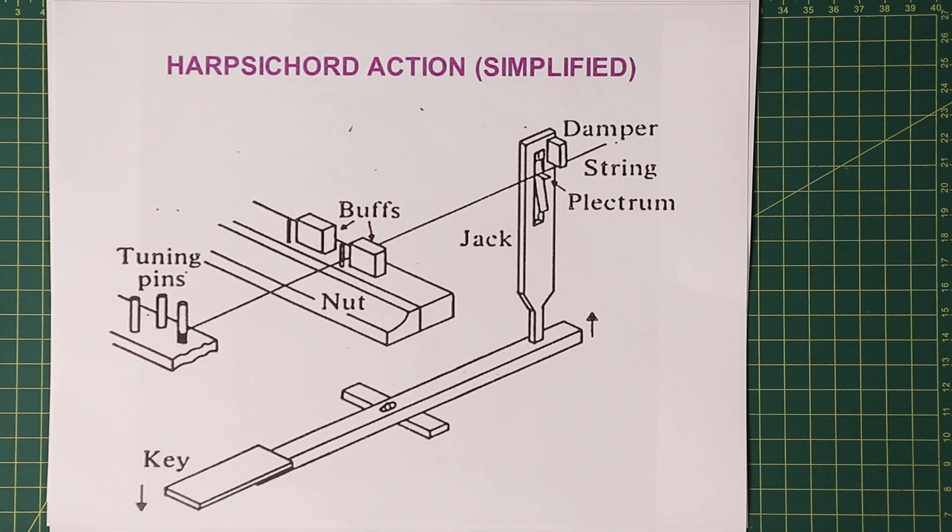Lowering the key would then move the pick back across the string, though due to the design, the pick could fold off to the side so as not to make much noise. Also, the damper would fall back on the string to quiet it.